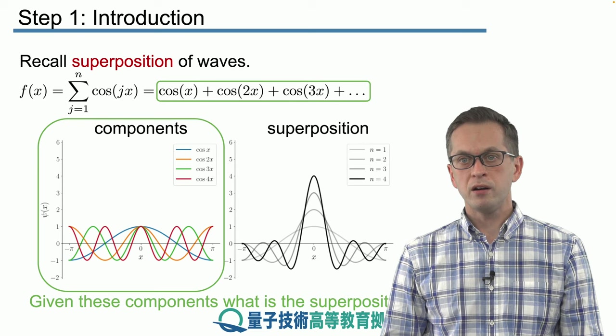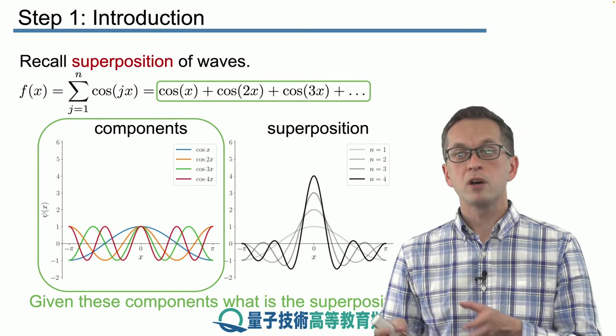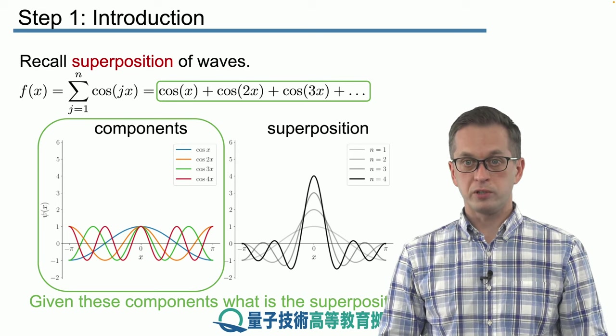And we can keep adding more and more components which will result in a different superposition. So far, up until this point, we always had the question, given the components, what is the resulting superposition?